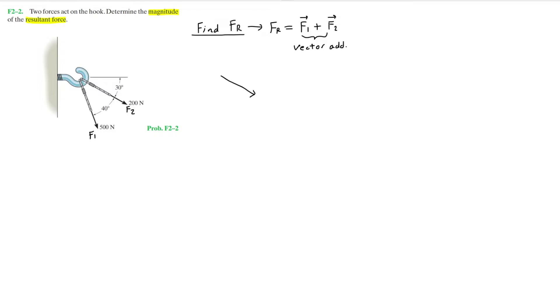So let's add these two forces by using the triangle law. So here we have F2. Then from the head of that vector, we have F1. And now the resultant force, Fr.